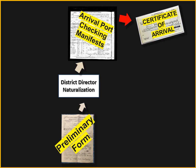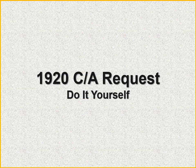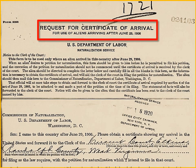These three videos will emphasize the preliminary form — exactly what it looks like, how it was used, and whether they were successful in finding the immigrant on the manifest. Let's look at an early Certificate of Arrival request, kind of like a do-it-yourself. This is from the early 1920s. It's a request for a Certificate of Arrival for use of aliens arriving after a key date — an important law that went into effect to better document the immigration and naturalization process.